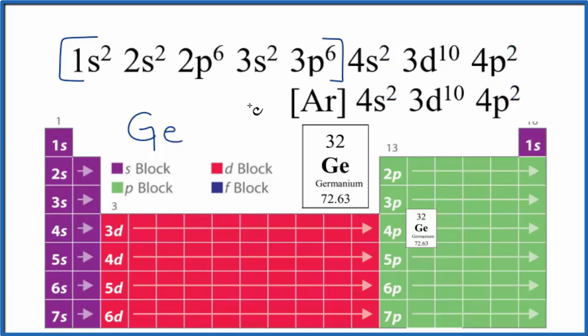If you wanted to write the electron configuration for Ge²⁺, you would just remove these two here, just put a zero here.